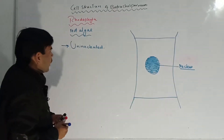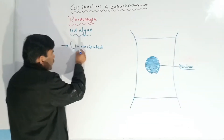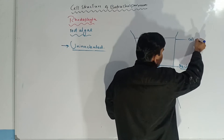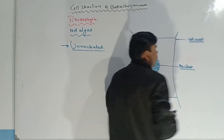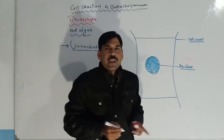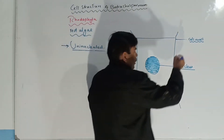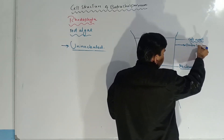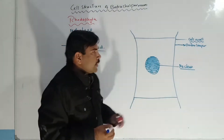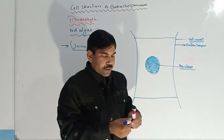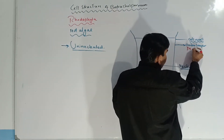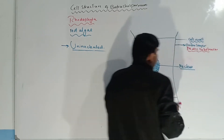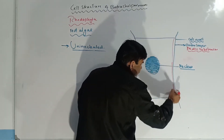Now we are going towards the cell wall. The cell wall of Batrachospermium is composed of two layers. The first outer layer is composed of pectic substances chemically.